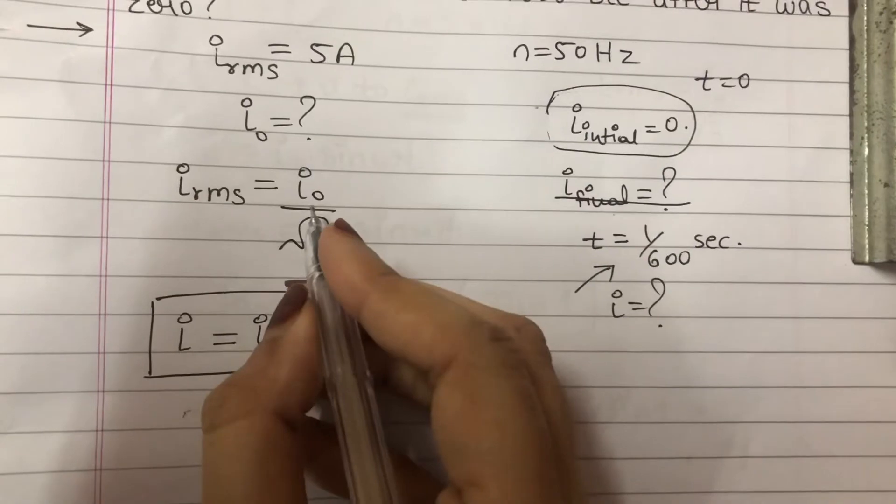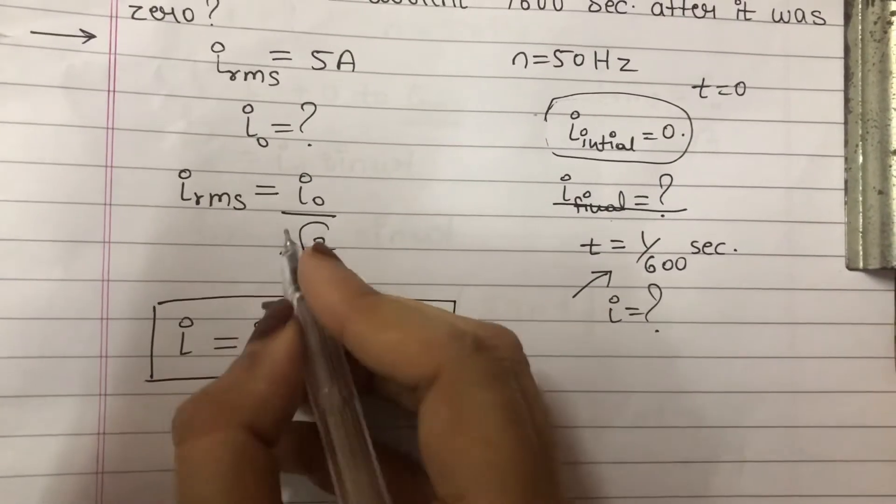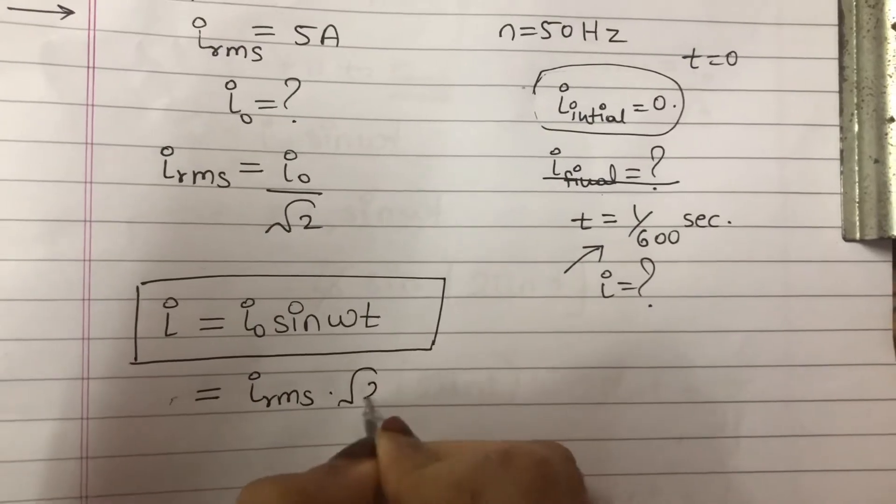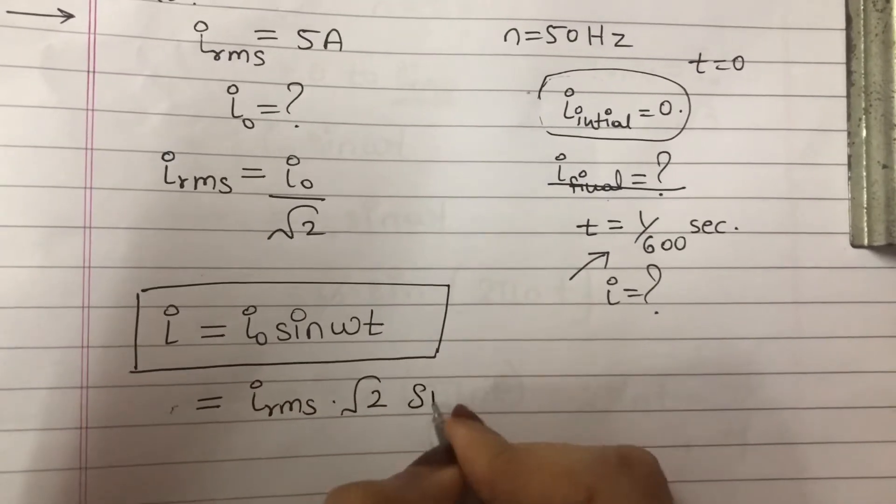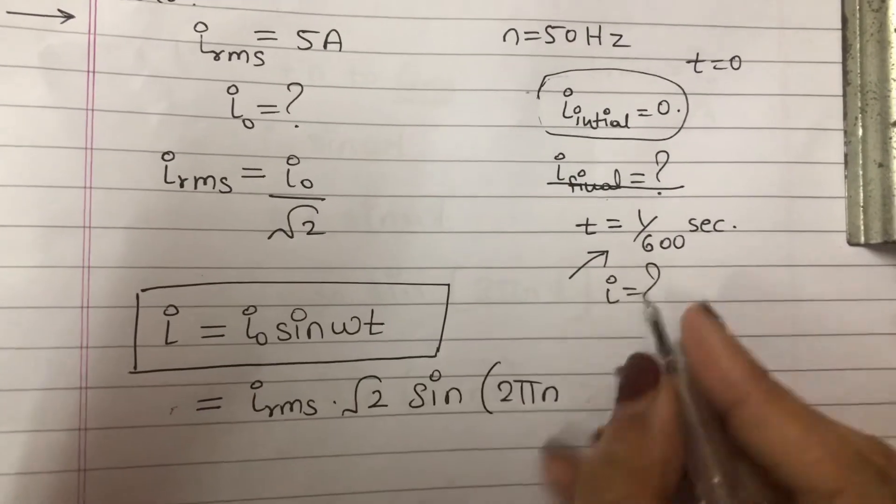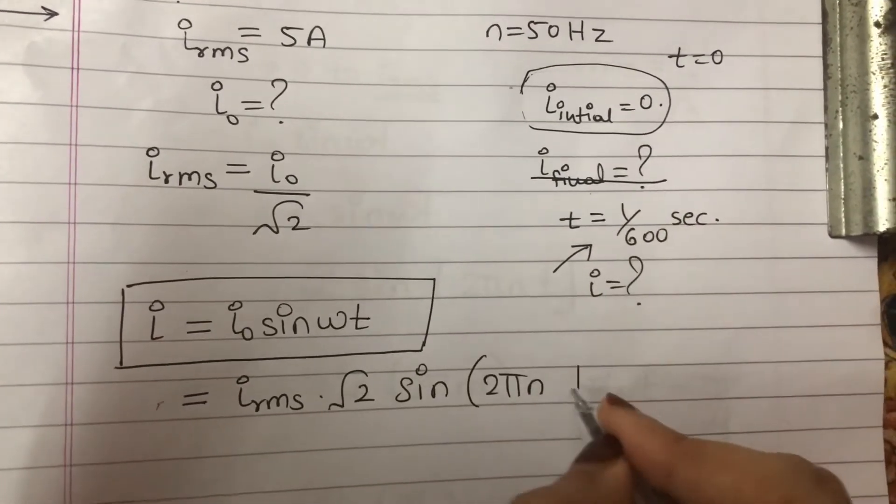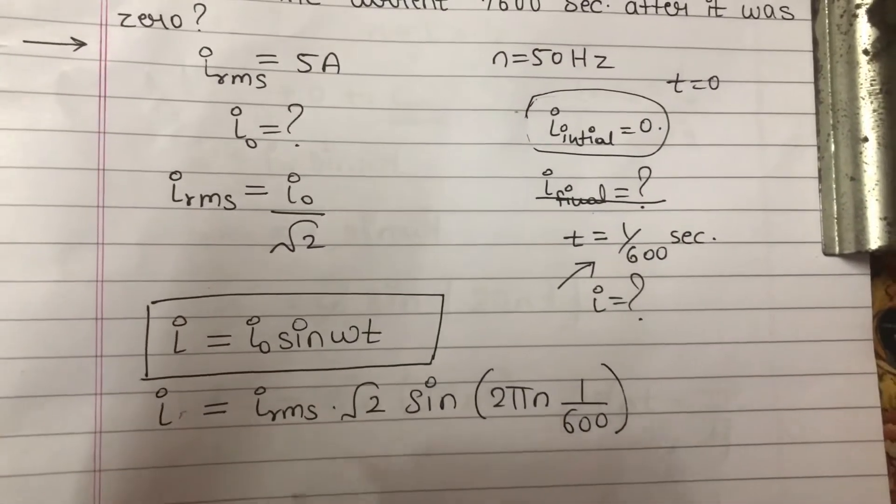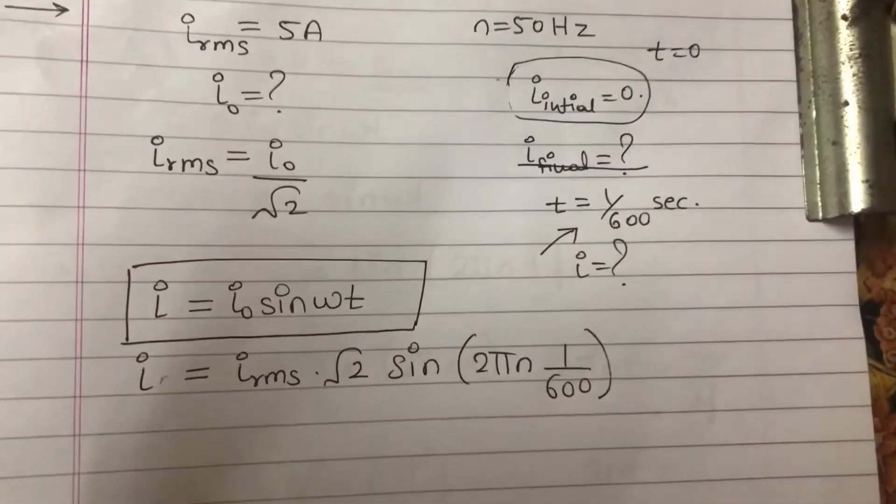So, I₀ will be I_rms into root 2. I can easily write that I_rms into root 2 will give me I₀ sin, omega is 2 pi n, time is known to us, that is 1 upon 600. So, this will give me the value of the current at time 1 upon 600 seconds.